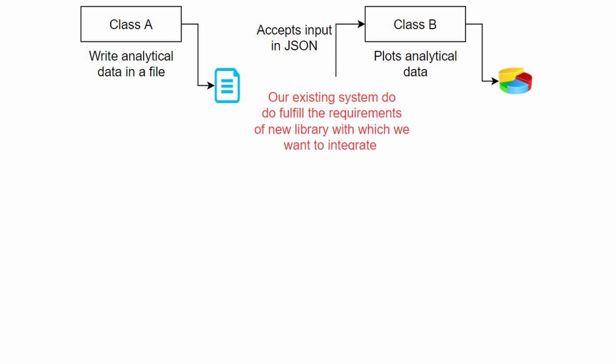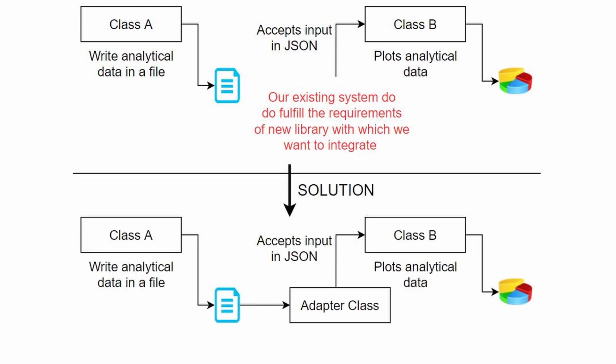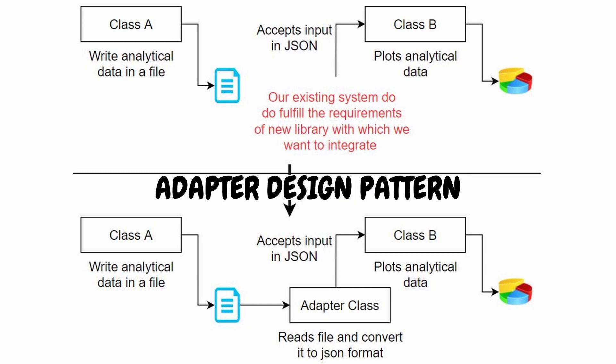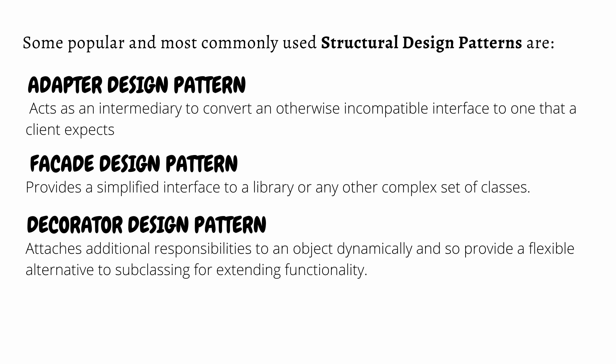Class A writes logs to a file — it writes the timestamp, status code, API being called, and response time. Class B can plot beautiful graphs and analytical data given input in JSON format. For both classes to work together, we need to make them compatible by converting the data. There can be other design problems related to class structuring, and in such cases we must use structural design patterns.